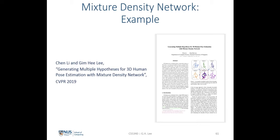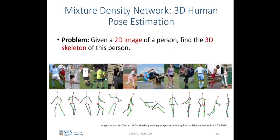3D human pose estimation is actually an inverse problem that requires multiple solutions. The problem setting is: given a 2D image of a person, with several examples containing different people in these images, we want to find the 3D human pose that corresponds to these humans in the image. This is a very difficult problem.